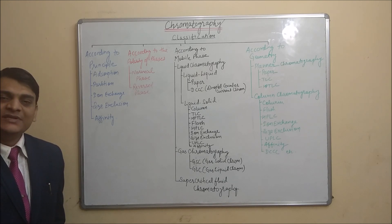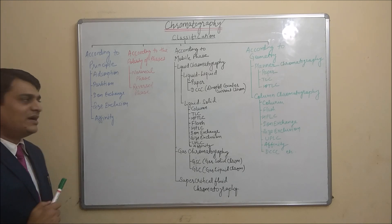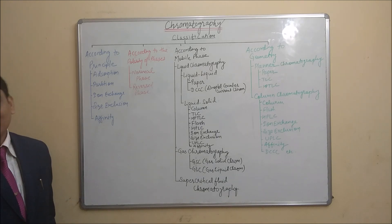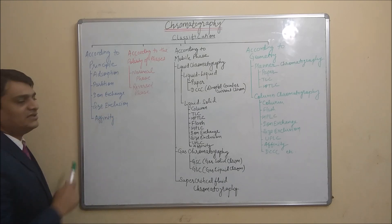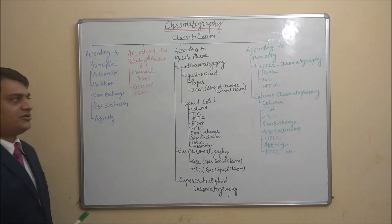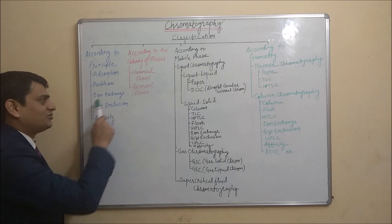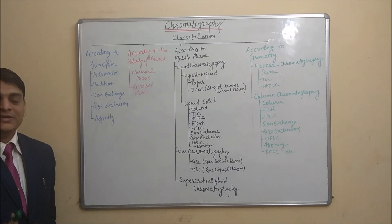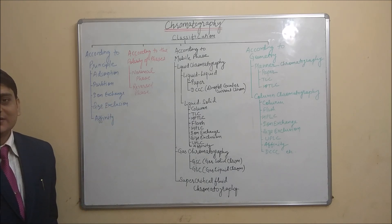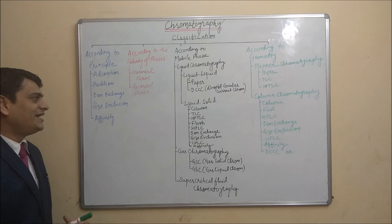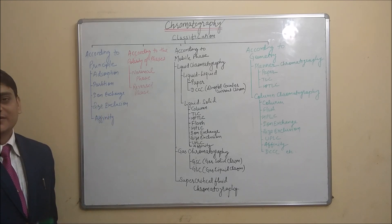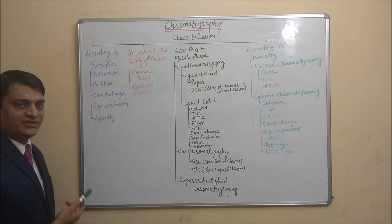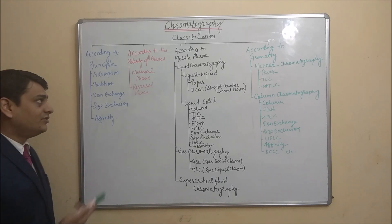In partition chromatography, stationary phase is liquid and mobile phase is liquid or gas. The third one is ion exchange chromatography, where separation takes place due to exchange of ions. Ion exchanger resins are used as discussed in detail in a previous video.